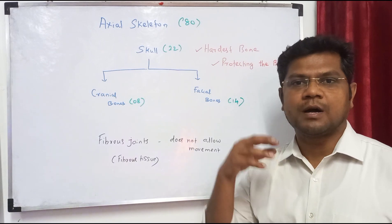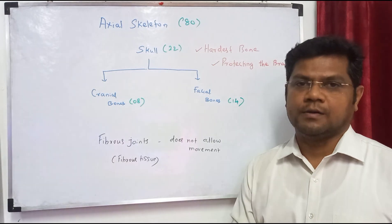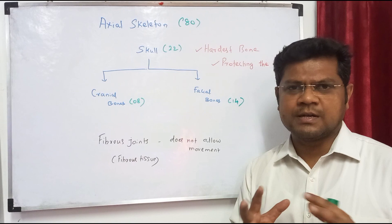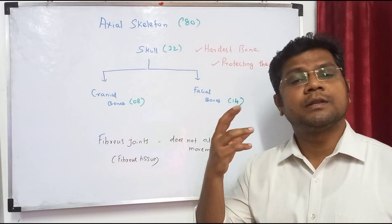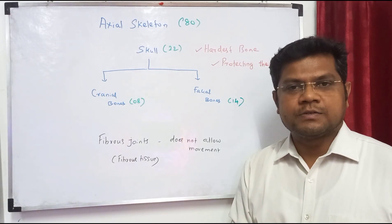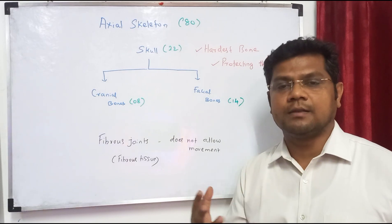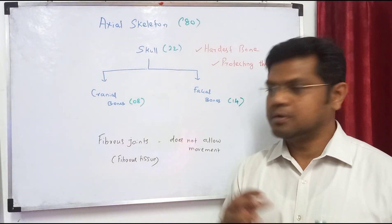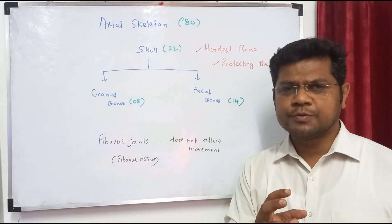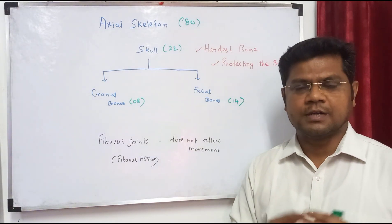Force is applied in the joint and then we move. The force we generate comes from muscles — the muscle is responsible for movement. The force generated by the muscle is applied in the joints. Movement in the joint is essential. However, in fibrous joints of the skull, movement is not allowed. So skull has 22 bones: 8 cranial and 14 facial.